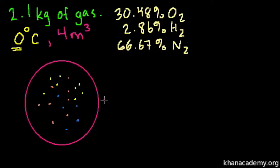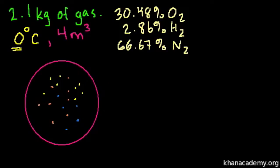Now what we need to figure out — and it's all at standard temperature, at zero degrees Celsius, which we know is 273 Kelvin — is what is the total pressure in the container being exerted on the surface. And then, this is the new concept, we want to figure out the partial pressures of each of these gases — essentially, how much is each gas contributing to the total pressure?